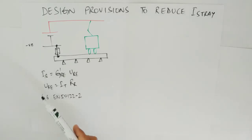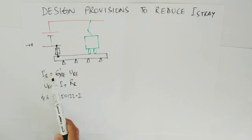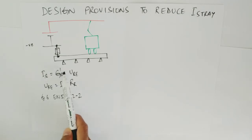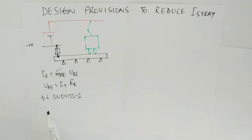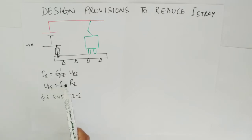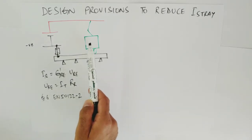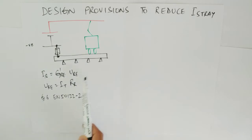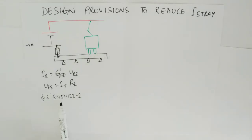In the previous lectures we have seen these two formulas: the stray current is equal to the product of the track-to-earth conductance times the running rail potential, and the running rail potential is the product of the traction current times the running rail resistance — that is the longitudinal resistance of the running rails. The design provisions we are going to discuss are mentioned in clause 6 of EN 50122-2.